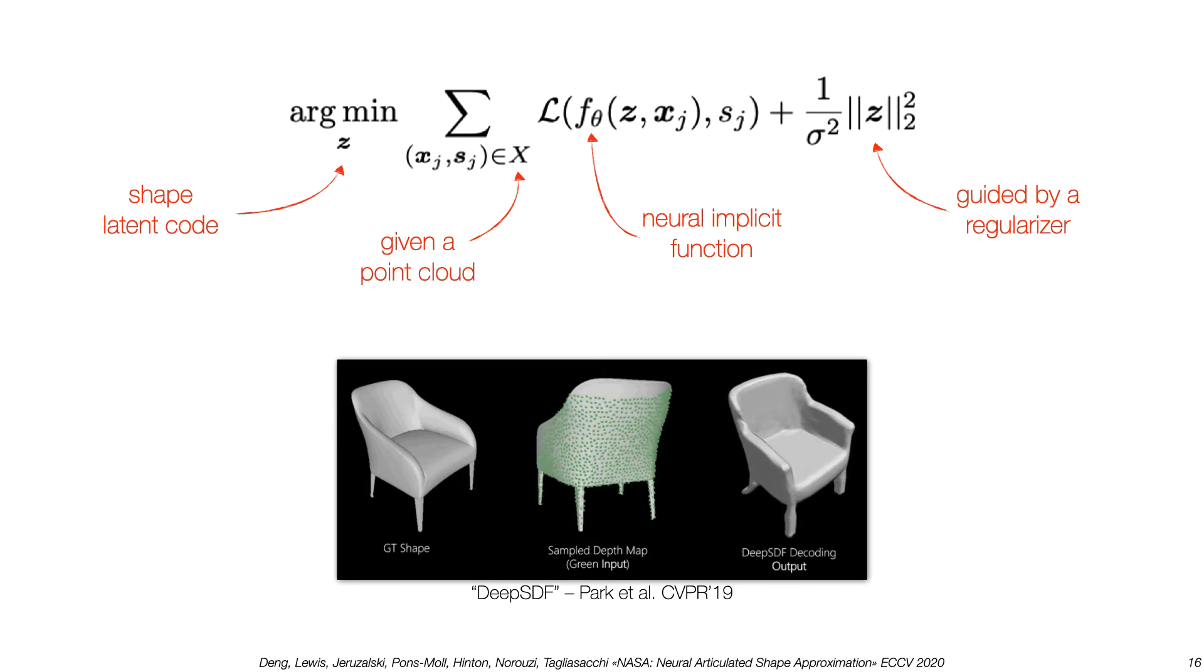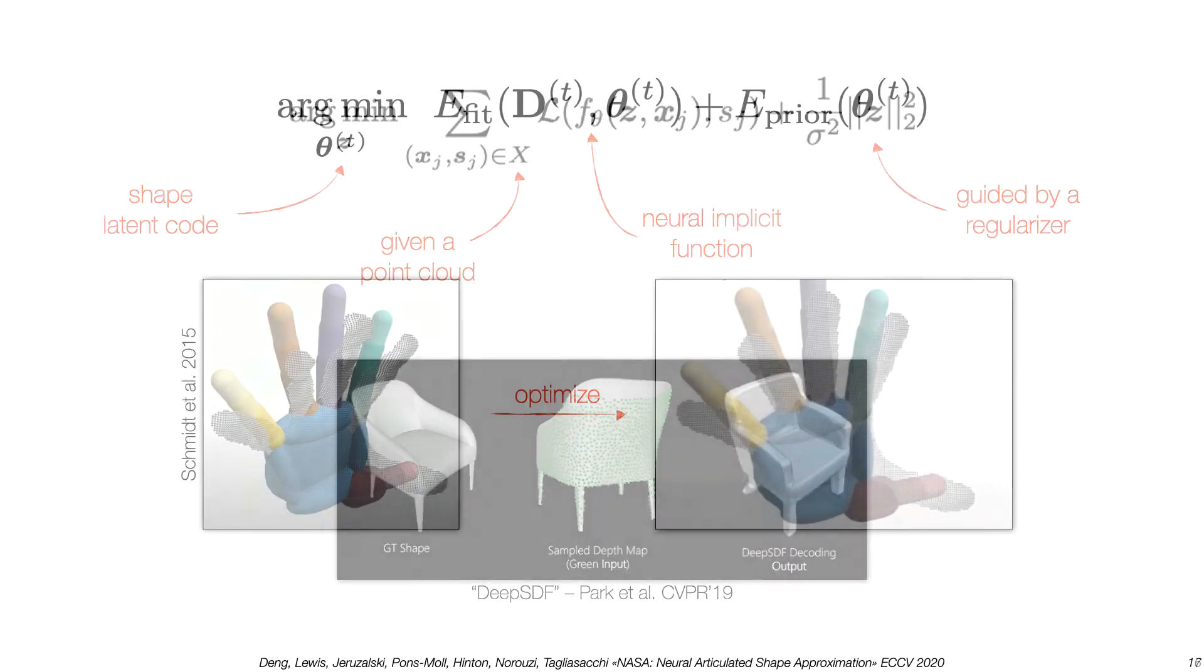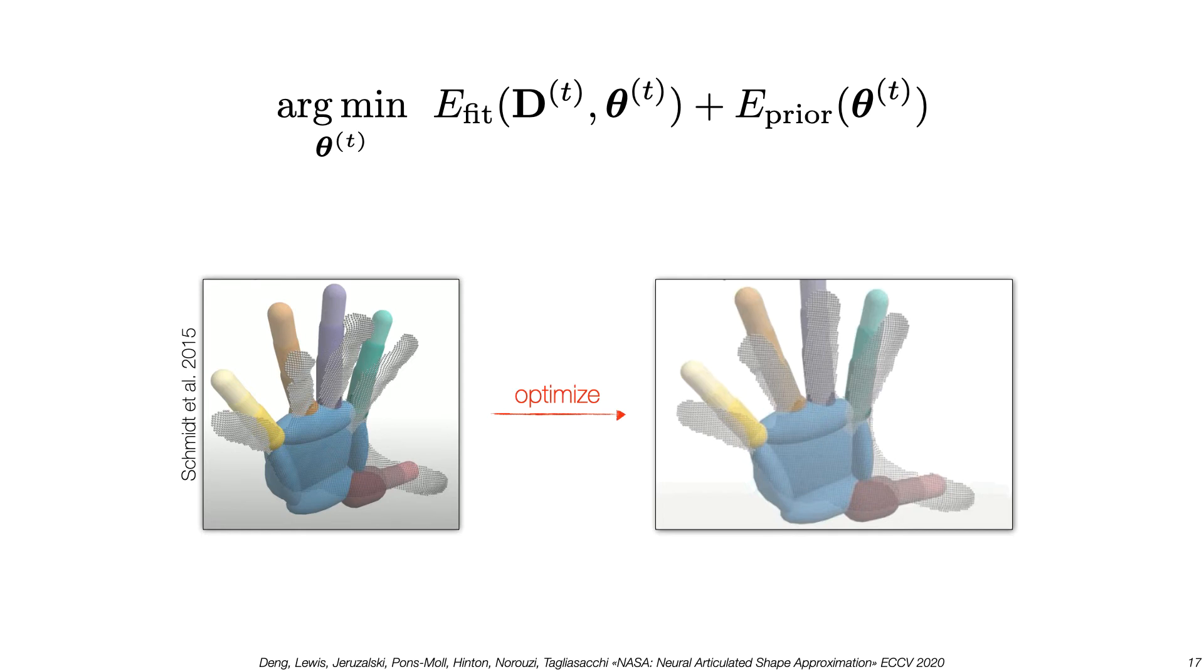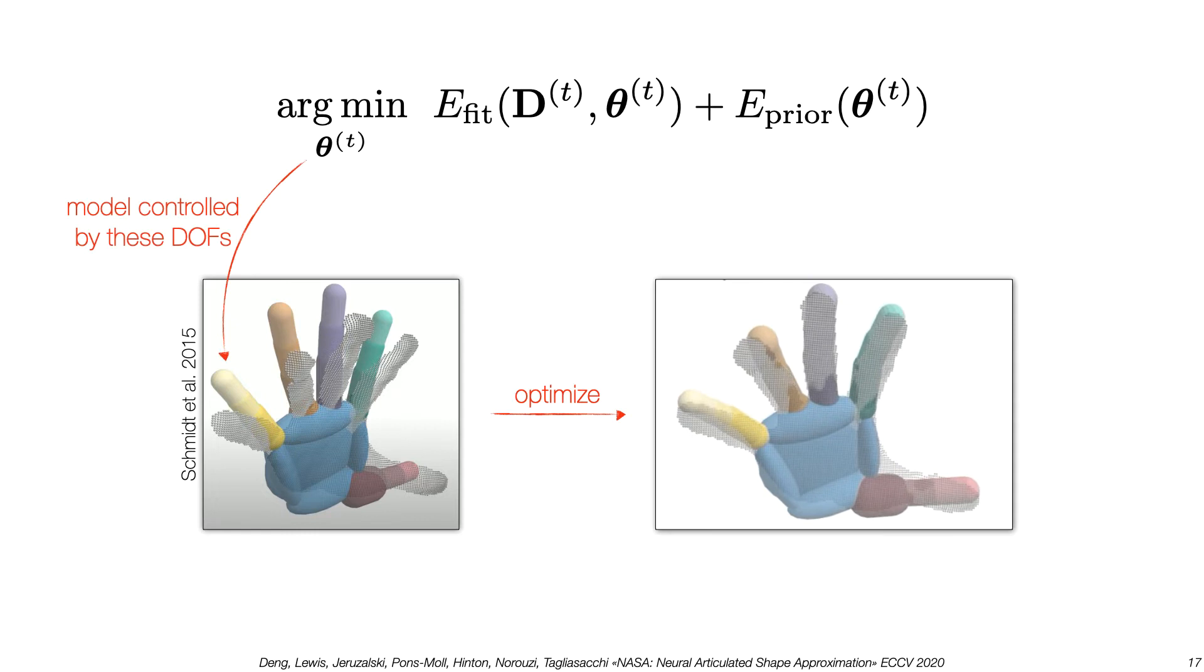Dense generative tracking has a very similar structure. It can be described as an optimization problem with fitting and prior terms. The solver seeks a pose so that the deformed model fits the point cloud.